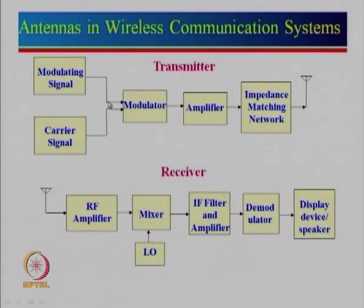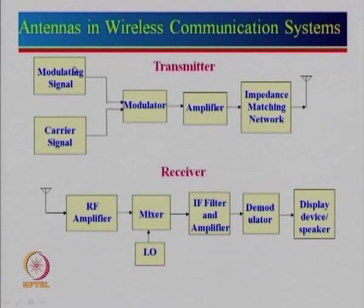Let us look at where antennas are used — in both transmitters and receivers. A transmitter consists of a modulating signal, also known as the information signal, which could be voice data, analog data, or digital data. That signal is superimposed on a carrier signal, which is the signal on which it is carried.